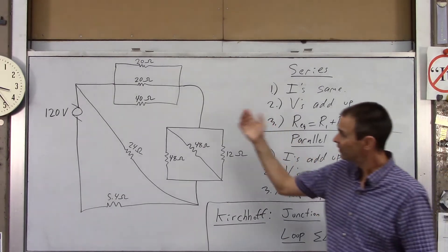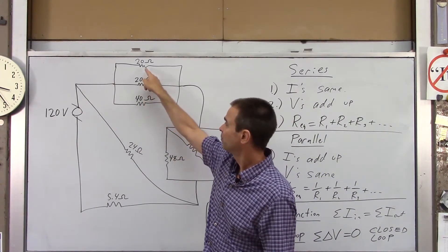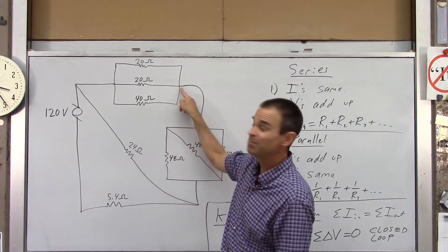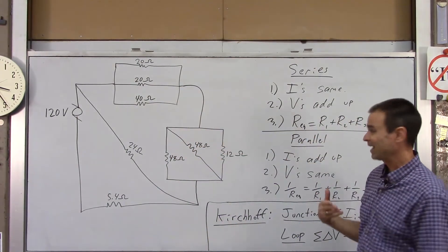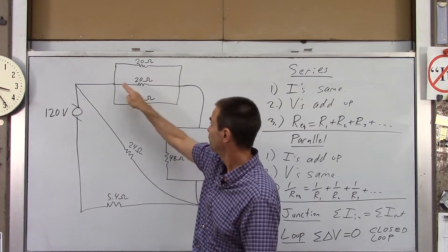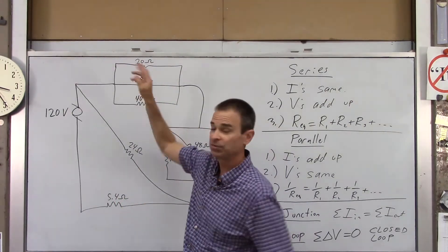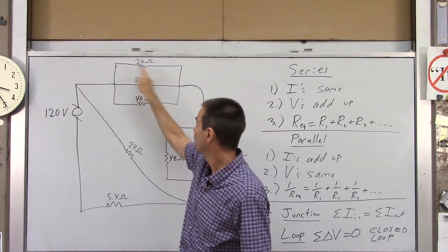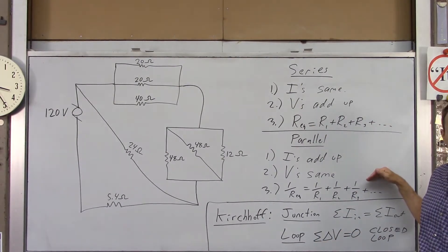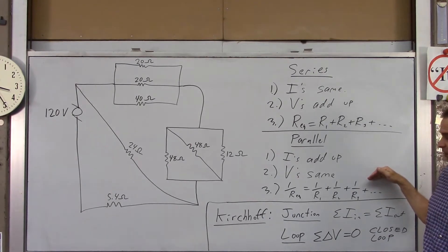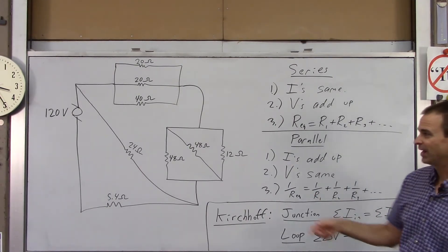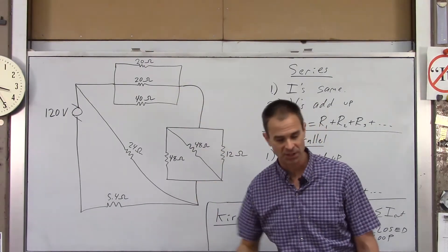For parallel circuits, the currents add up. So this current plus that current plus that current equals the current in the main wire, because electrons don't just disappear. Voltages are the same across all parallel branches — electrons fall the same height regardless of which path they take. To find total resistance for a parallel section, you add up the reciprocals of the resistances and take the reciprocal of that sum. Adding resistors in parallel actually reduces overall resistance.